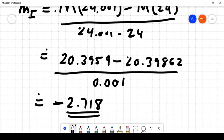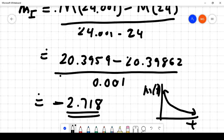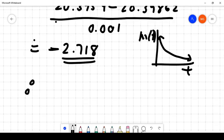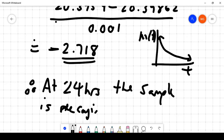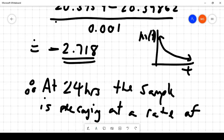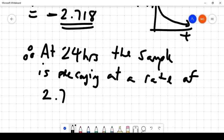Well, remember, time is in hours. So if we were graphing this, what we would have is a graph that is, its mass as a function of time is decaying as time passes in hours. So what we would say is, at the 24-hour mark, our therefore statement would be, therefore, at one day, or at 24 hours, the sample is decaying at a rate of 2.718 grams per hour. That's the rate at which it's decaying at that particular instant in time.